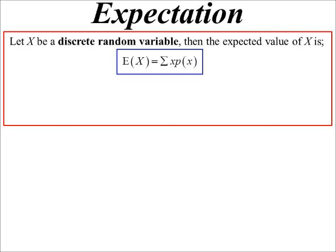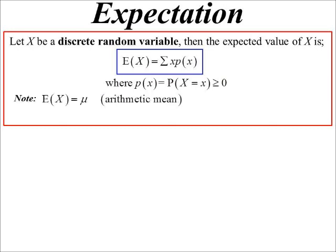Remember, probability of X—what I'm saying there is, we had it written before as probability of X equals x. Let's write it as p(x) because it's quicker to write than P(X = x). You'll find people use the p(x) notation just to save time. And we know that has to be bigger than zero.